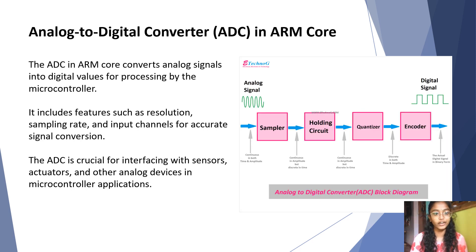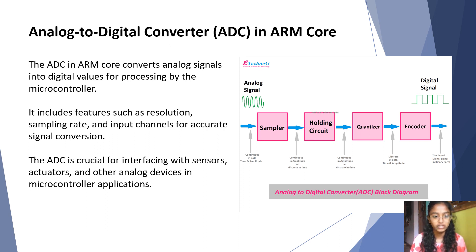The analog to digital converter in ARM core converts analog signals into digital values for processing by the microcontroller. It includes features such as resolution, sampling rate, and input channels for accurate signal conversion. The ADC is essential for interfacing with sensors, actuators, and other analog devices in microcontroller applications.